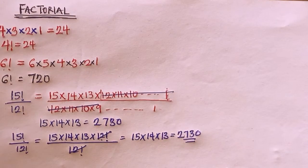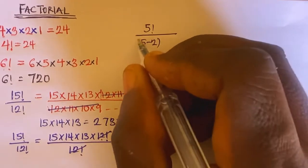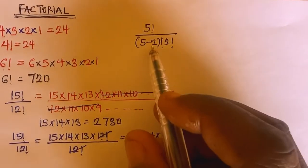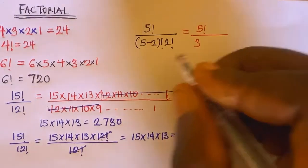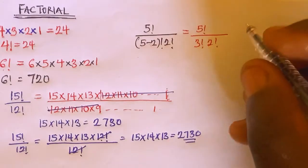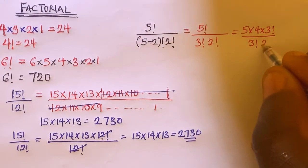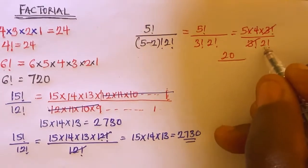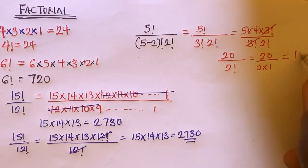Now let's say you are asked to evaluate 5 factorial divided by (5 minus 2) factorial times 2 factorial. It's very simple. First, evaluate the bracket: 5 minus 2 equals 3, giving 5 factorial divided by 3 factorial times 2 factorial. That becomes 5 multiplied by 4 multiplied by 3 factorial, divided by 3 factorial times 2 factorial. The 3 factorials cancel, leaving 20 divided by 2 factorial, and 2 factorial is 2 multiplied by 1, so the answer is 10.